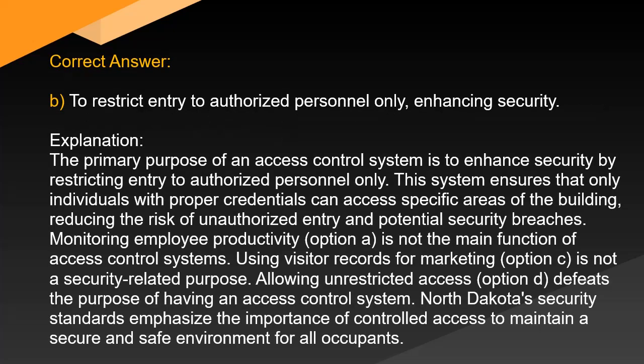Correct answer: B. To restrict entry to authorized personnel only, enhancing security. The primary purpose of an access control system is to enhance security by restricting entry to authorized personnel only. This system ensures that only individuals with proper credentials can access specific areas of the building, reducing the risk of unauthorized entry and potential security breaches. Monitoring employee productivity (option A) is not the main function of access control systems. Using visitor records for marketing (option C) is not a security-related purpose. Allowing unrestricted access (option D) defeats the purpose of having an access control system. North Dakota security standards emphasize the importance of controlled access to maintain a secure and safe environment for all occupants.